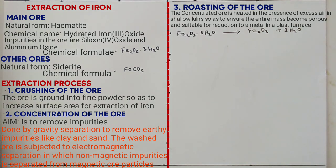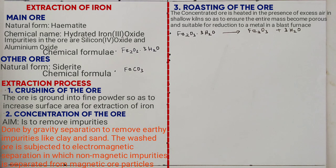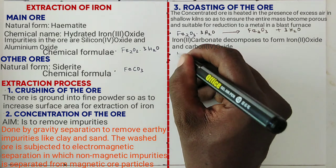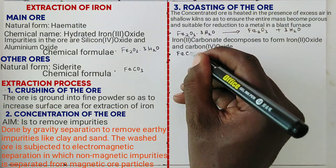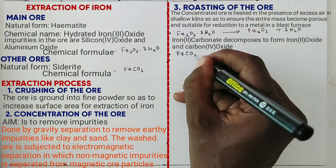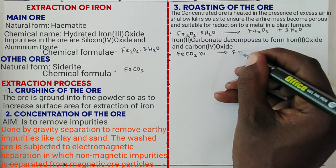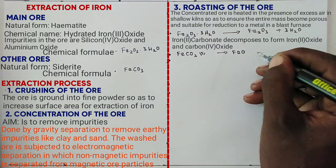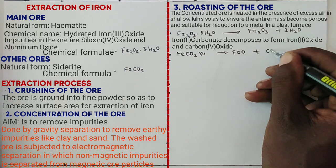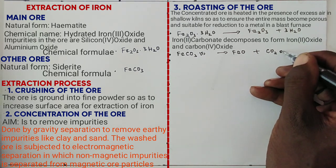If there is a presence of siderite, which is iron(II) carbonate, it is decomposed to iron(II) oxide and carbon dioxide as shown in the equation: FeCO3 (solid) gives FeO plus CO2 (gas).